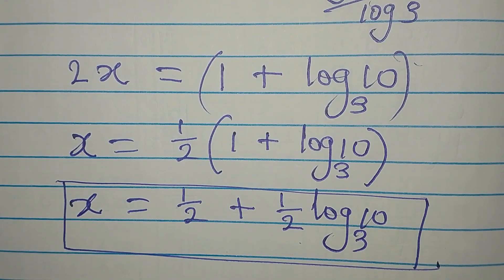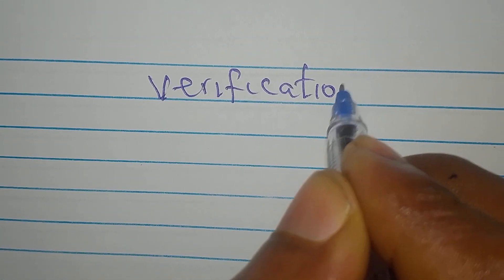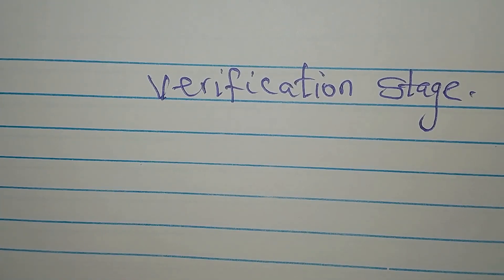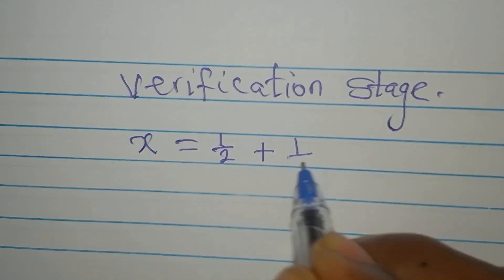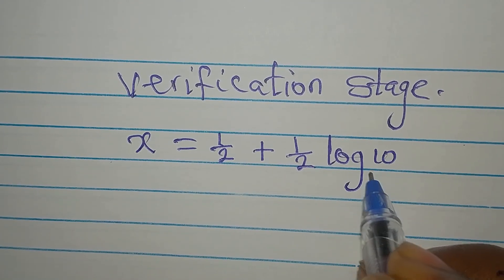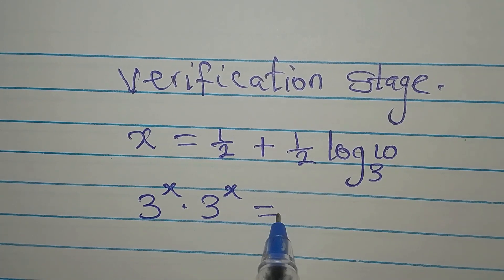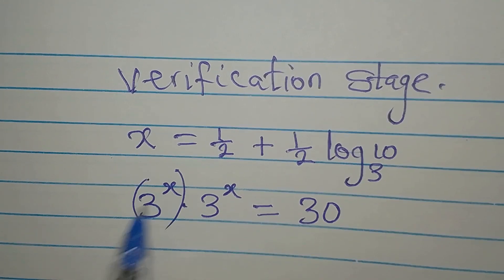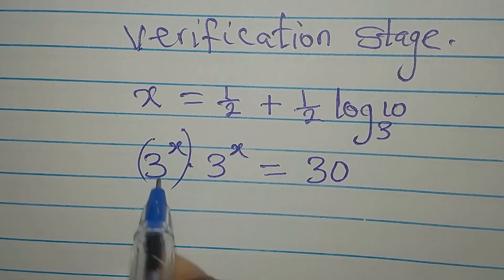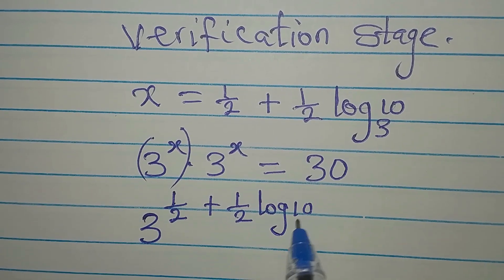Let's verify this to make sure we are correct. The value of x is 1 over 2 plus 1 over 2 log 10 to base 3. The original equation is 3 to the power of x times 3 to the power of x equals 30. I'll work with 3 to the power of x alone, which is 3 to the power of 1 over 2 plus 1 over 2 log 10 to base 3.